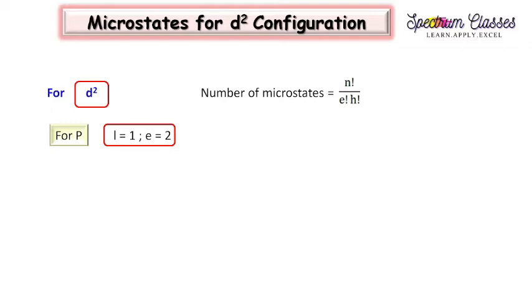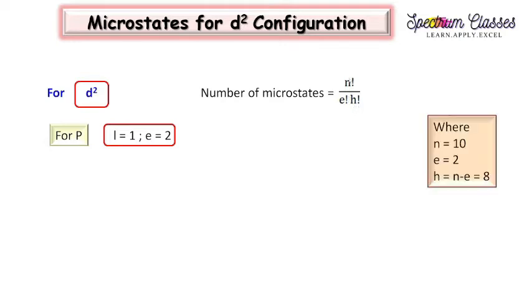I have already mentioned D2 configuration in my previous video. First we are going to calculate possible microstates for D2 configuration. The formula is: number of microstates equals factorial n divided by factorial e and factorial x. Factorial n is the maximum occupancy, which for d electrons is 10. e is the number of electrons present, and the number of holes is 10 minus 2, equal to 8.